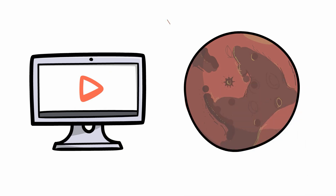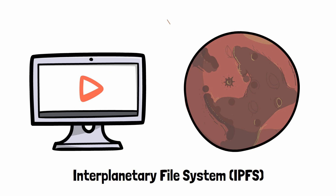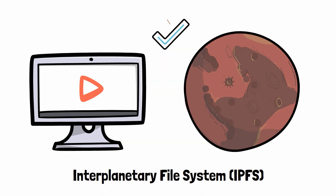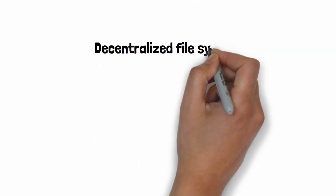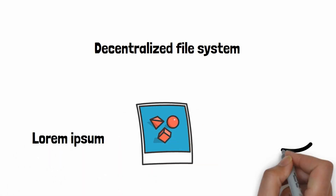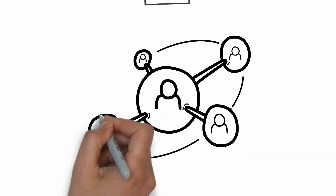Have you ever wondered if it's possible to download a movie on Mars? Me neither! But fortunately, thanks to IPFS, aka the interdisciplinary file system, the answer is yes! IPFS is a decentralized file system. You can use it to upload and download files such as text, pictures, or videos. Technically, IPFS is a peer-to-peer network.